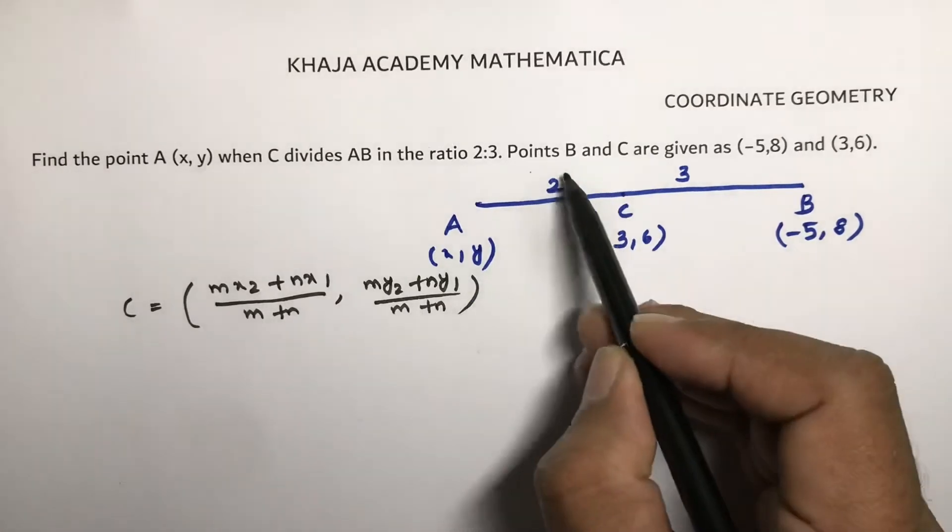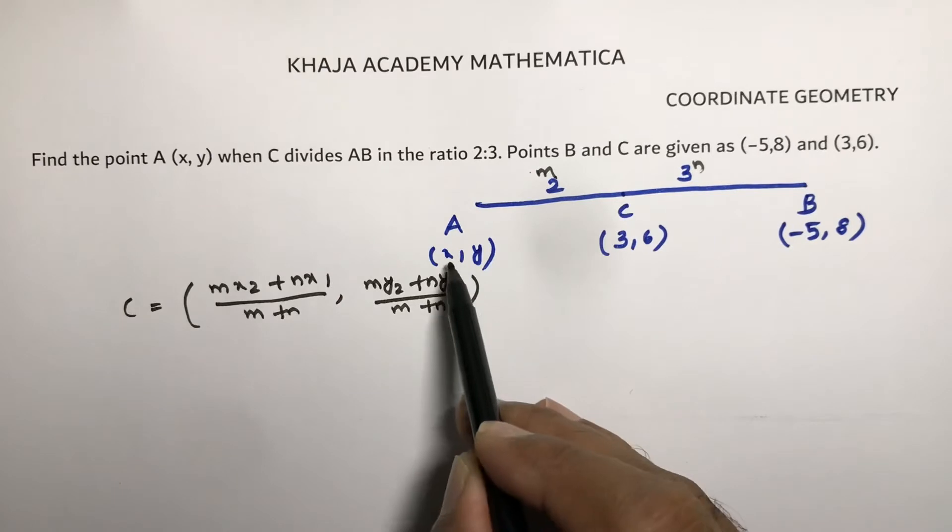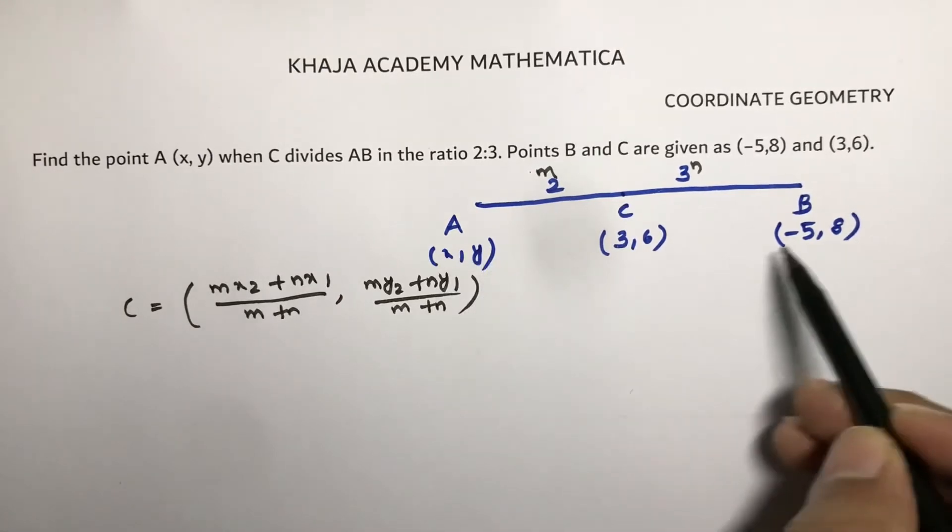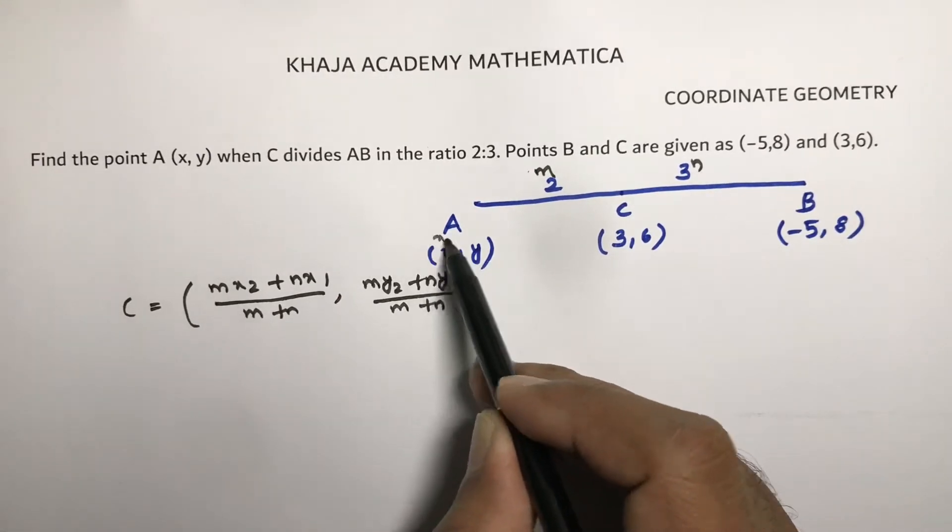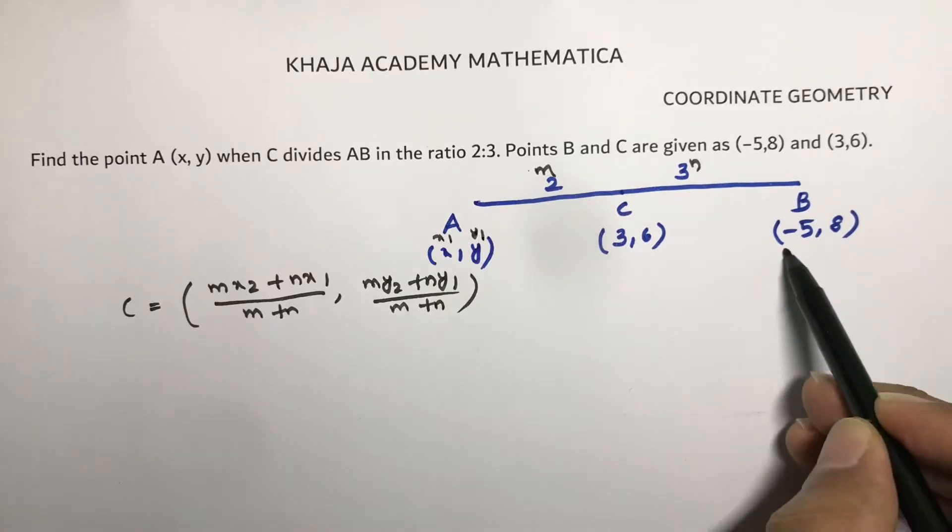So here this ratio 2 is to 3 is M and N. X, Y is X1, Y1. This is X1, Y1 and this is X2, Y2.